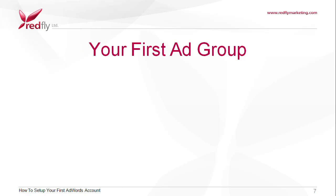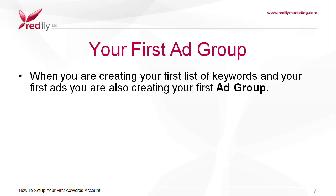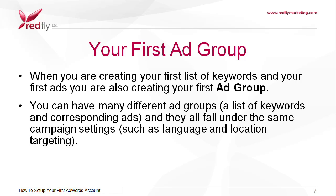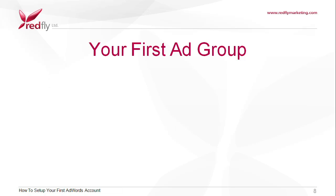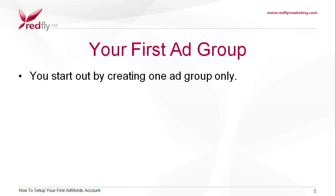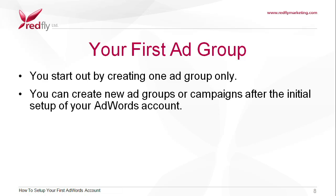Creating your first ad group. When you're creating your first list of keywords and your first ads, you're also creating your first ad group. You can have many different ad groups — a list of keywords and corresponding ads — and they all fall under the same campaign settings, such as language and location targeting. You start out by creating one ad group only, but you can create new ad groups or campaigns after the initial setup of your AdWords account.